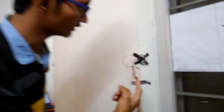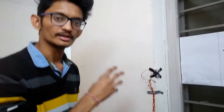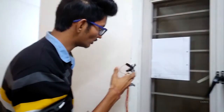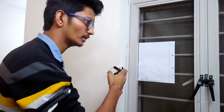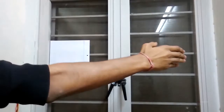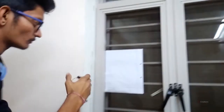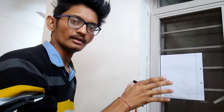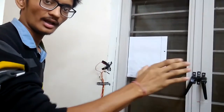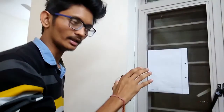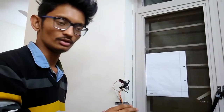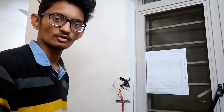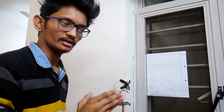Our next module is the ultrasonic sensor. The main working principle is that an echo signal is sent out and a trigger signal returns. The time taken is calculated, and from that time we derive the distance. We then fix a threshold based on that distance, and if the threshold is broken the alarm triggers.